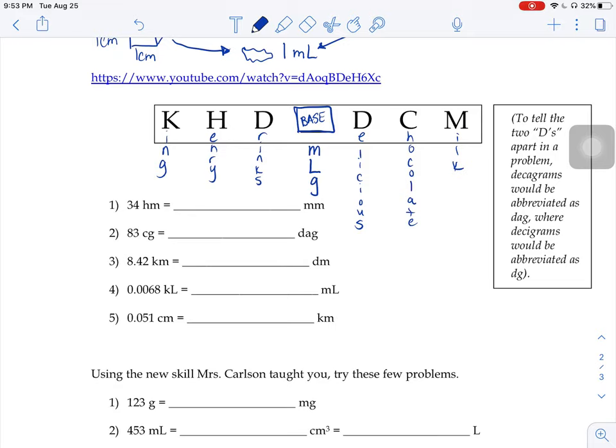So let's try one of these guys. Let's say you had 34 hectometers, H M, hectometers. And we want to go from hectometers to millimeters. So what we're going to do is start on that H and pretend like you're stepping on top of the letter H. And we have to take steps to get from the letter H to the letter M. So to do that, I would have to take one, two, three, four, five steps to the right. So that means that in my head, I'm going to slide my decimal point over five spaces.